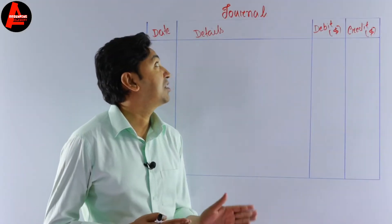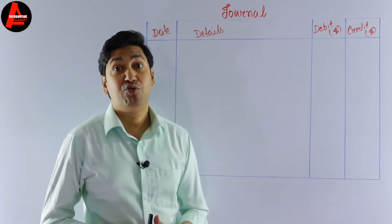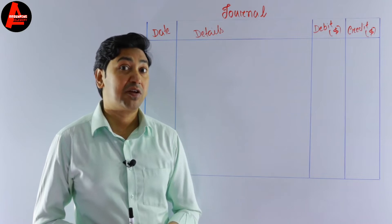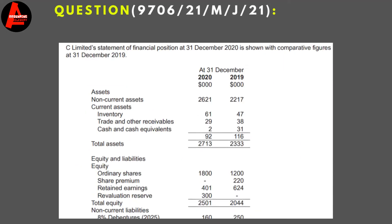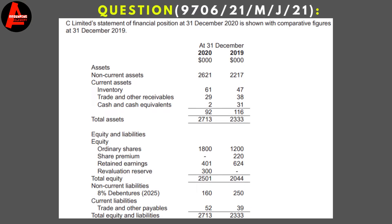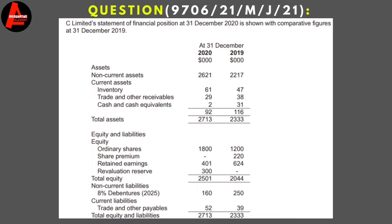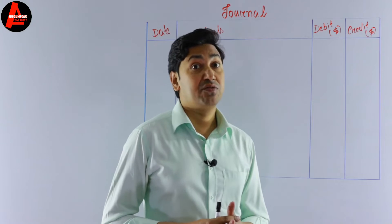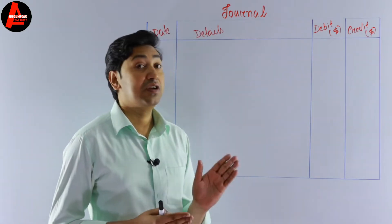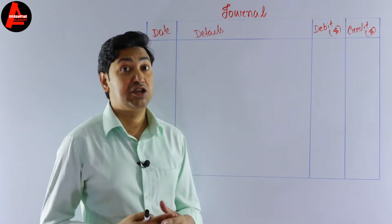To prepare this journal entry, we will follow a question taken from a Cambridge A-level Accounting past paper. So before we start, let us have a look at the question on the screen. C Limited's statement of financial position at 31st December 2020 is shown with comparative figures at 31st December 2019. We have information for 2019 and on the left side we have information for 2020. We'll take this information to record a journal entry for the issuance of bonus shares.